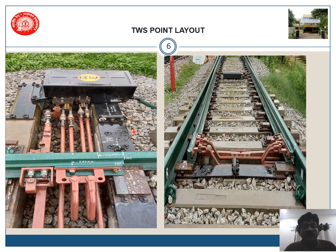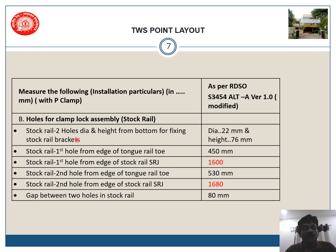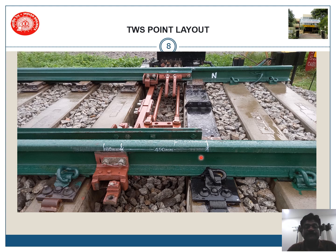Now let us know where we need to provide holes and the markings of stock rail and tongue rail along with peak lamp holes. Starting with the stock rail: two holes of diameter 22 mm are required at a height of 76 mm. The first hole from the edge of the tongue rail is 450 mm as per RDSO, while the second hole is at 530 mm. From the stock rail joint, the first hole is at 1600 mm and the second hole is at 1680 mm — the gap between these two holes is 80 mm.